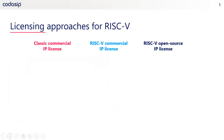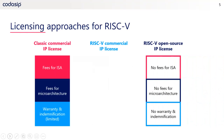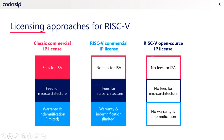Looking at these licensing approaches in more detail: with a classic commercial IP license with a proprietary instruction set, you pay a fee that includes paying for the ISA and the microarchitecture, and with that you get warranty and indemnification. In contrast, with an open source IP license, you don't pay any fees — so you don't pay for the ISA or the microarchitecture, but you also don't get warranty and indemnification. A RISC-V commercial IP license is something in the middle: you're not paying for the ISA because that's free, but you pay for the microarchitecture and you get warranty and indemnification with it.